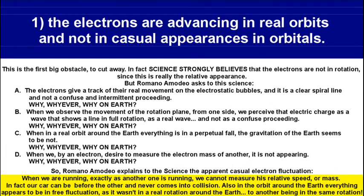Point three: when in a real orbit around the earth, everything is in a perpetual fall — the gravitation of the earth seems to not be present. Why? Why on earth?